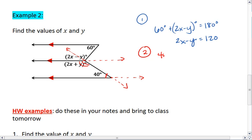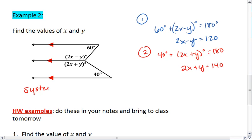We get 40 plus 2x plus y equals 180. 2x plus y equals 140. We now have two equations with two variables. This is called a system of equations.